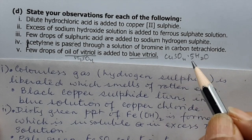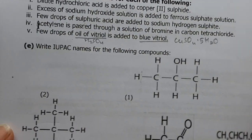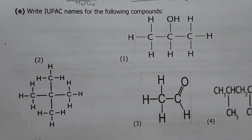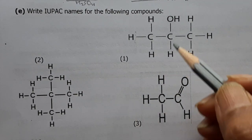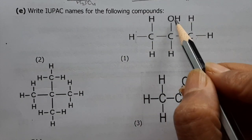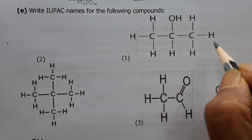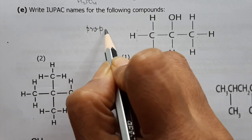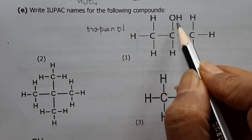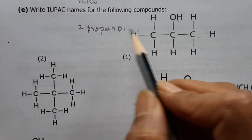Part E: Organic chemistry — write the IUPAC names. (i) The straight chain has three carbons, so it is 'prop-'; the OH group gives 'ol'. The second carbon has the OH, so it becomes 2-propanol or propan-2-ol.